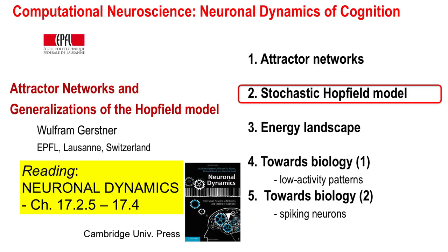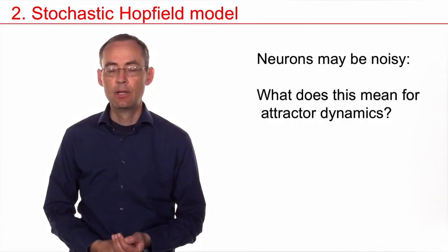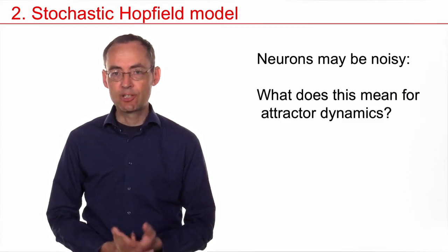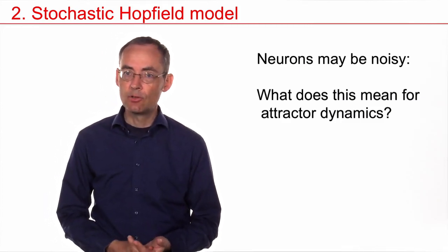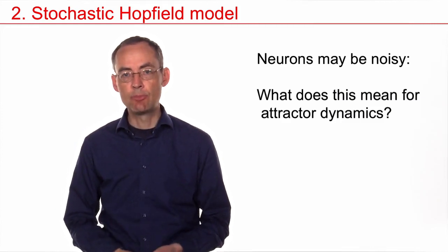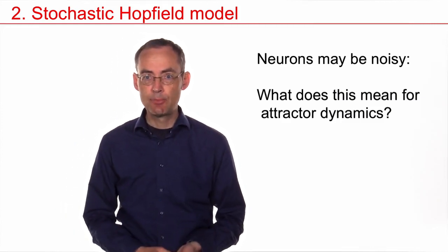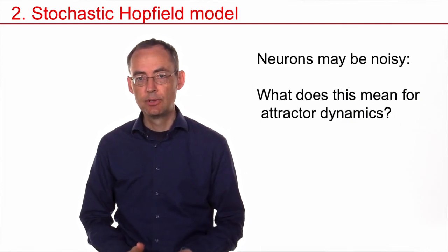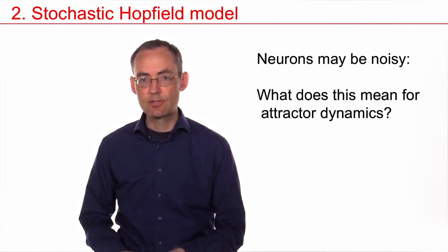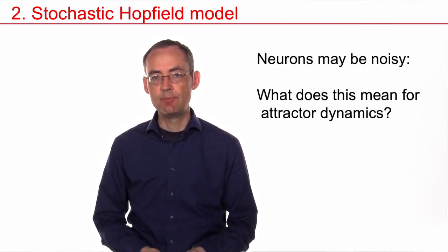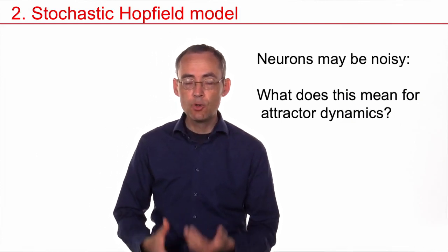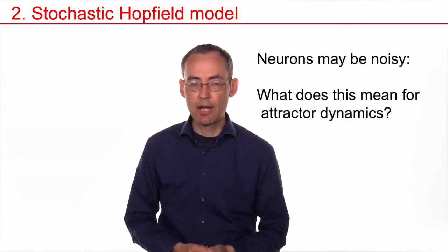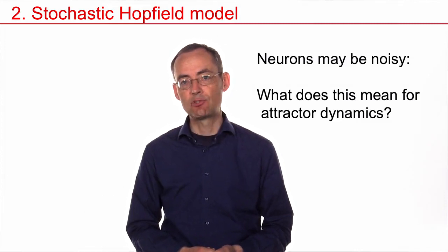Welcome back to the class Computational Neuroscience, Neuronal Dynamics of Cognition. We have looked at attractor networks, and so far we have been considering only the deterministic Hopfield model. The deterministic Hopfield model means that the output of a neuron is just the sign function of its input. But neurons may be noisy — so what would that imply for the attractor dynamics?